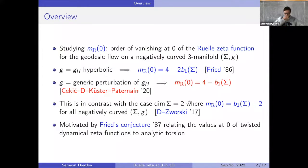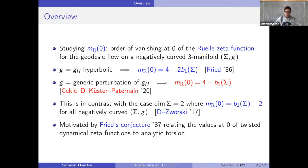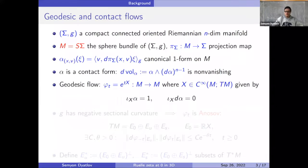The motivation comes from something called Fried's conjecture, which relates the values at zero to analytic torsion. I'll mention that briefly later, even though our result doesn't say anything directly about the value of torsion, but it's an important motivation.